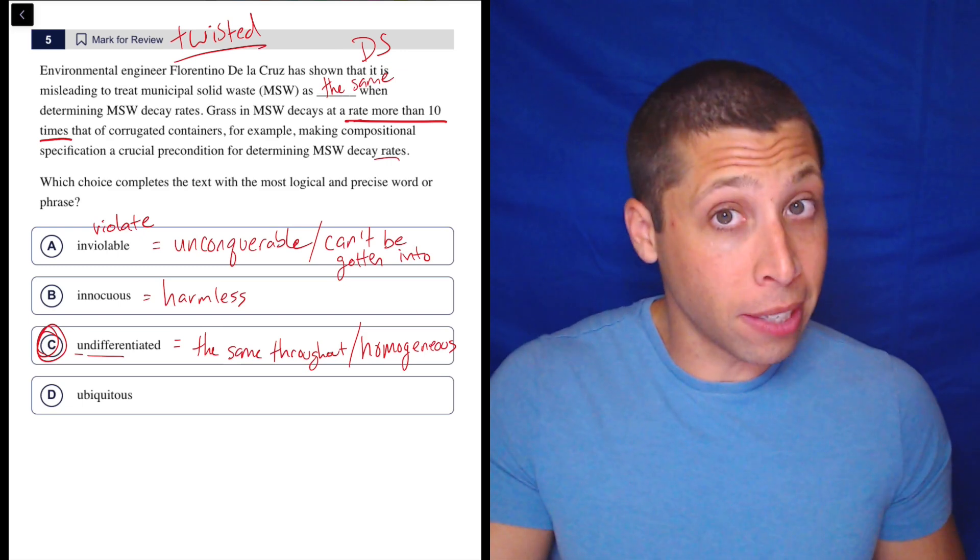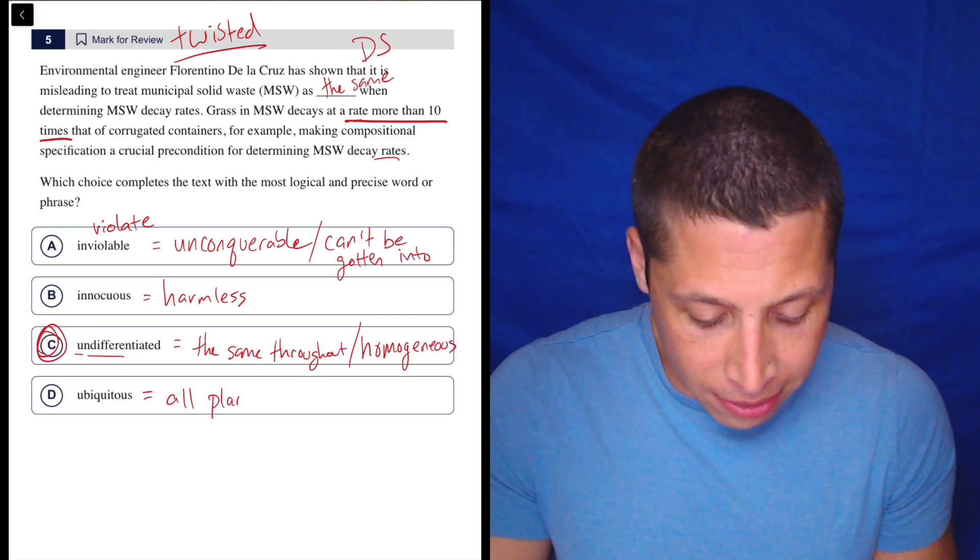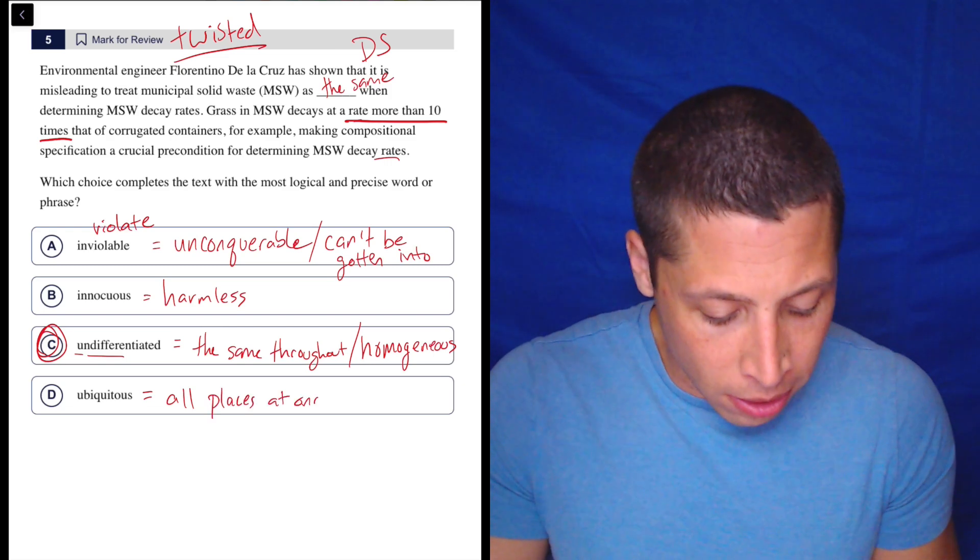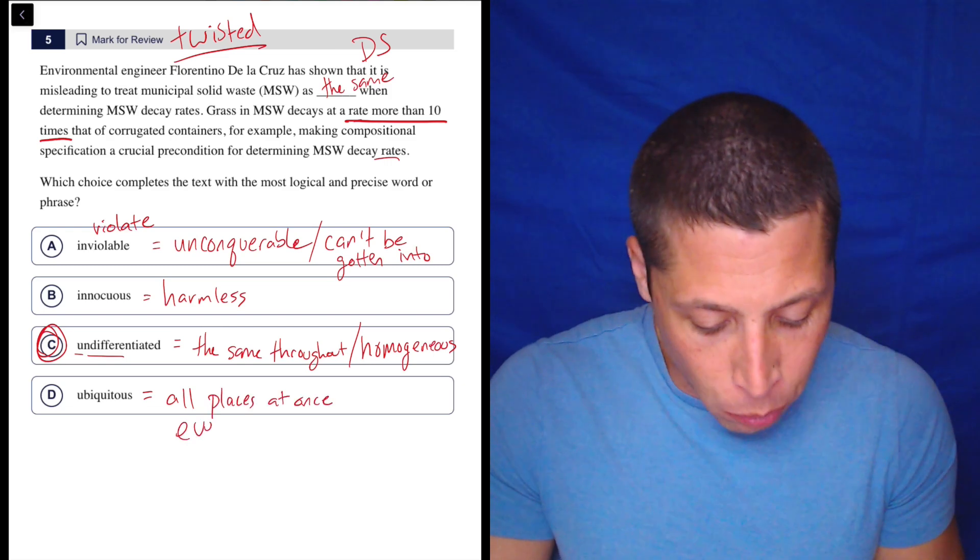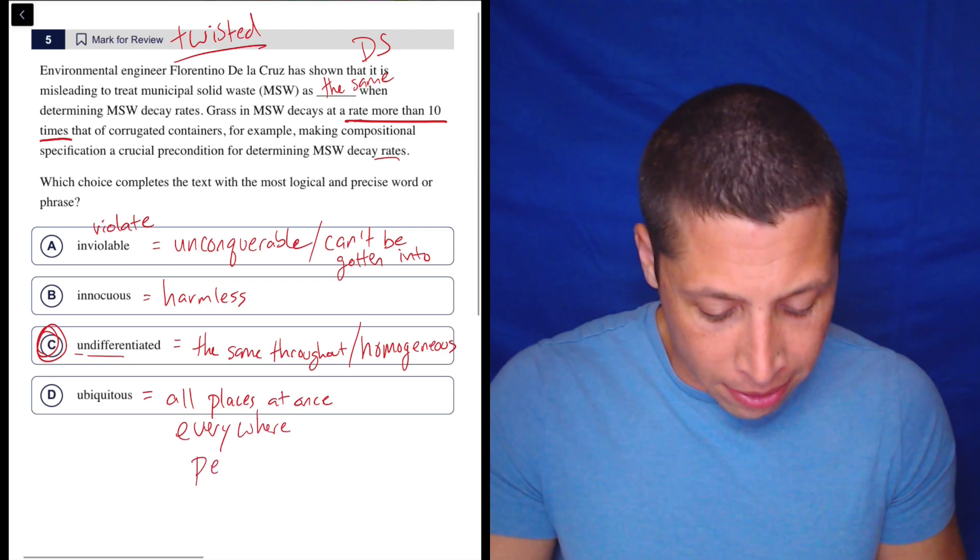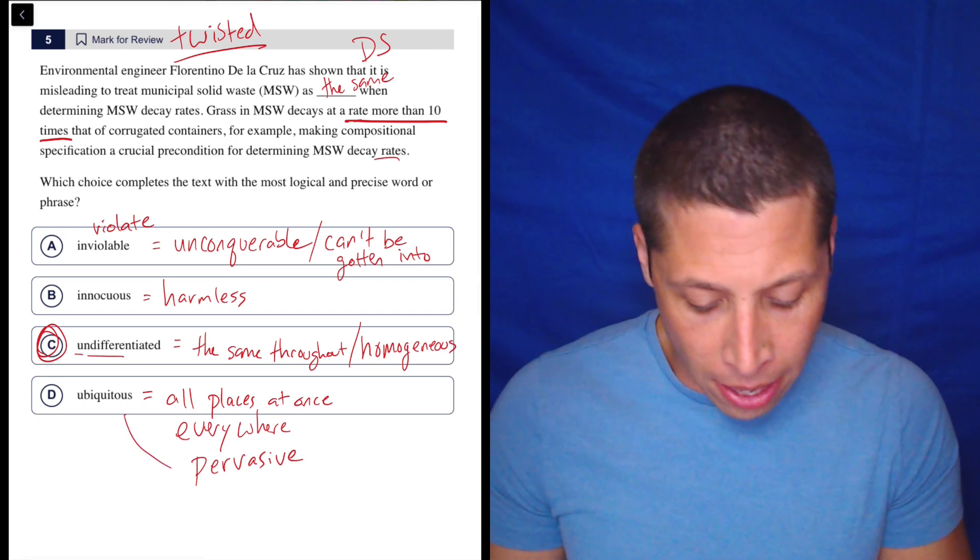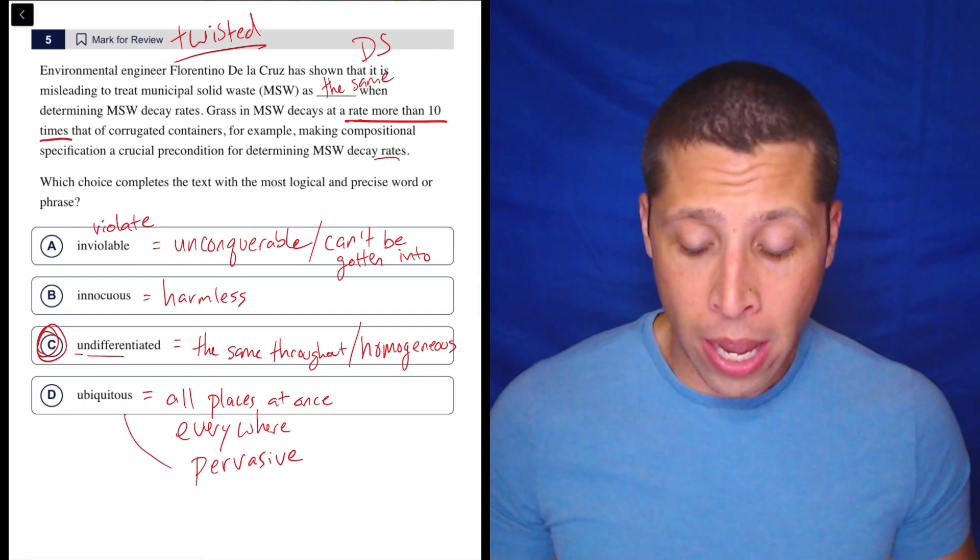Ubiquitous might also be on that list. That is everywhere at once. So all places at once, it's kind of everywhere. Another good SAT word that comes up on lots of tests is the word pervasive, pervasive. That can also mean that. So it's a nice little synonym. That's also an SAT word.